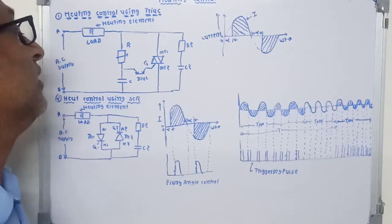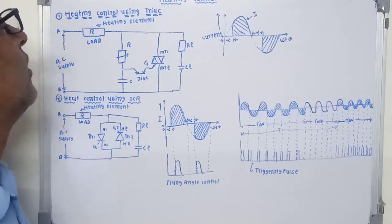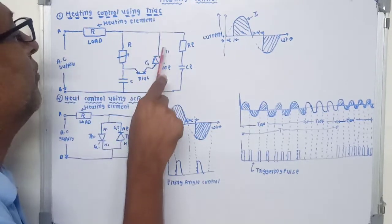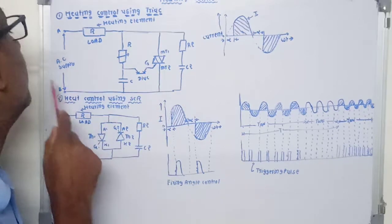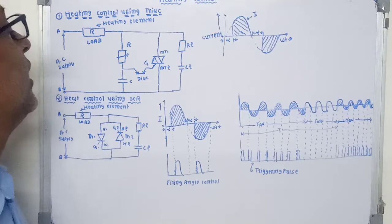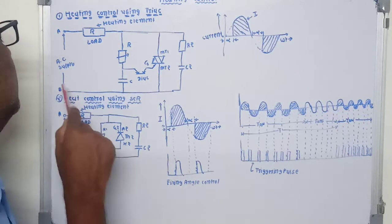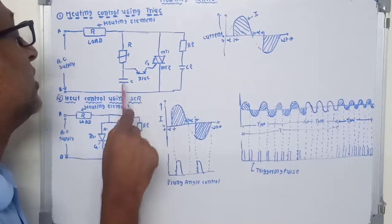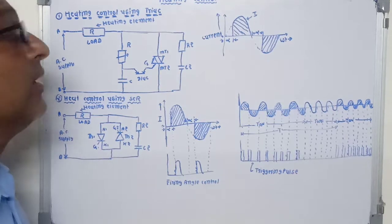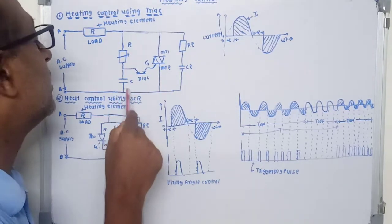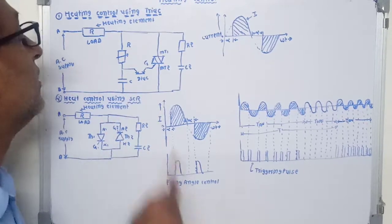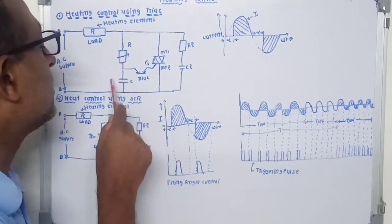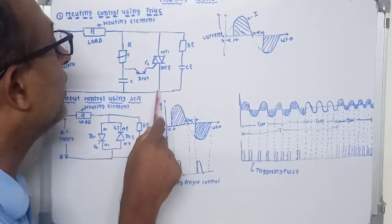The charged capacitor then discharges through the gate and MT2 terminal of the TRIAC, turning on the TRIAC. Current flows from terminal A, through the load, then MT1, then MT2, to terminal B of the supply. During the negative half cycle, terminal B becomes positive compared to terminal A, and capacitor C starts to charge in the reverse direction. When the reverse voltage across the capacitor exceeds the DIAC's breakdown voltage, the DIAC offers very low resistance.